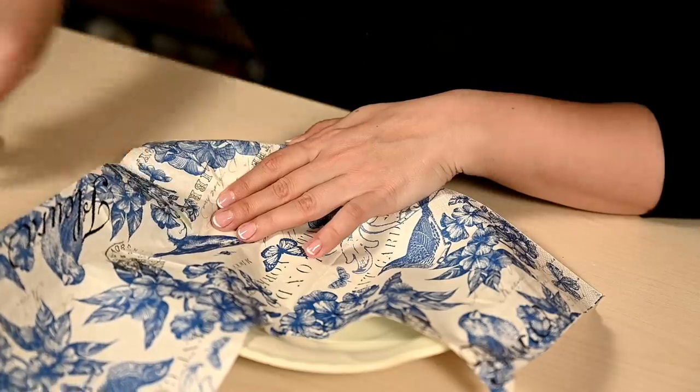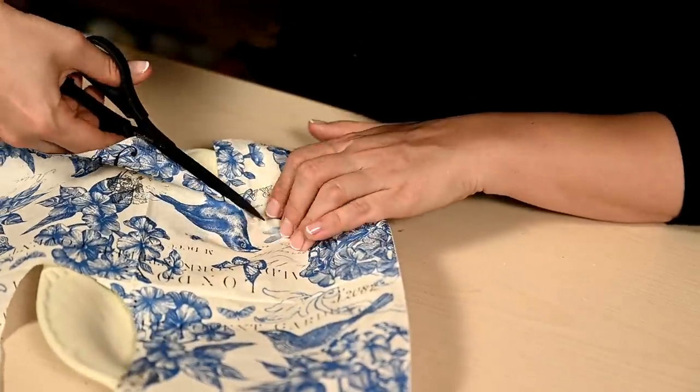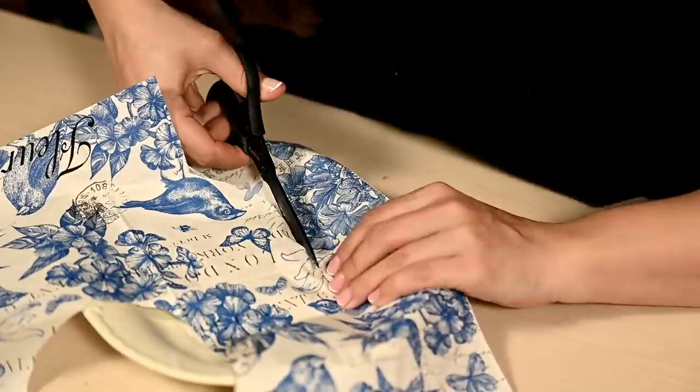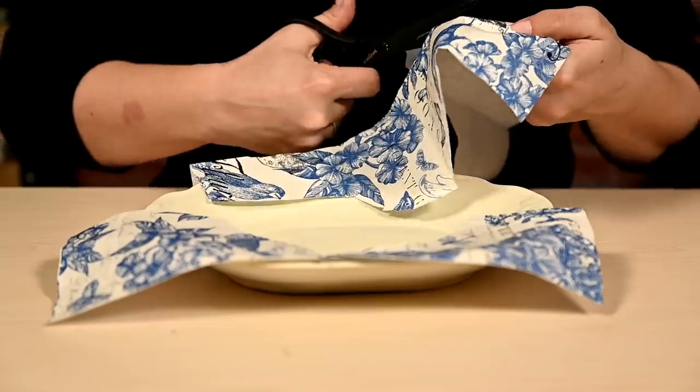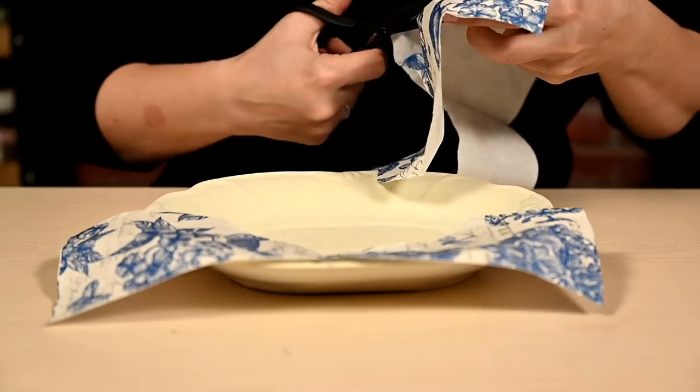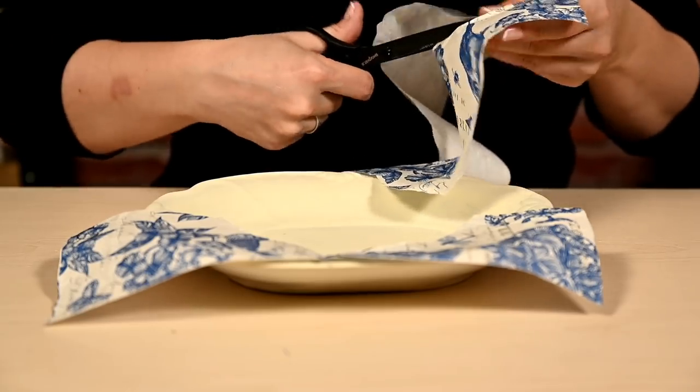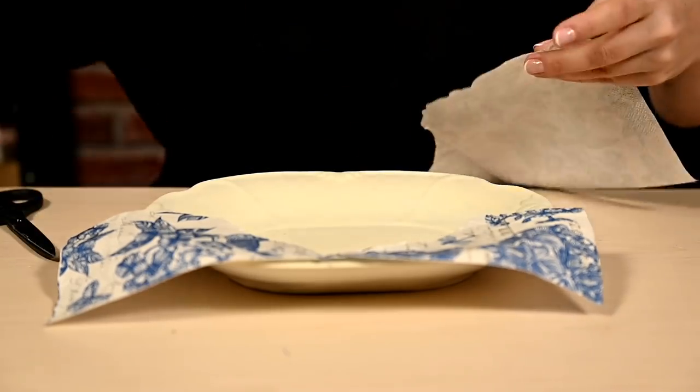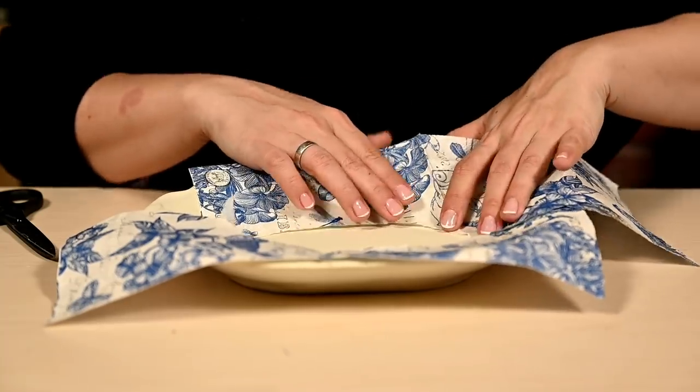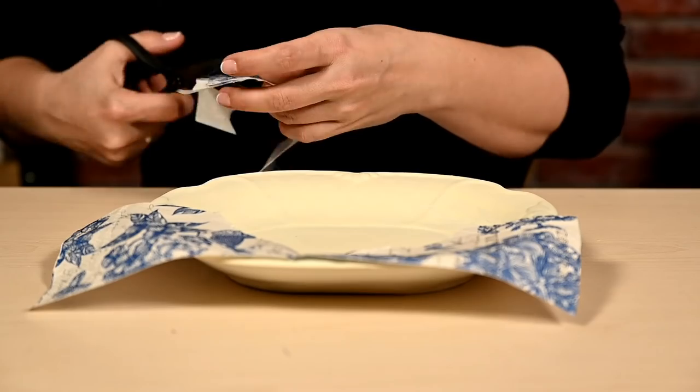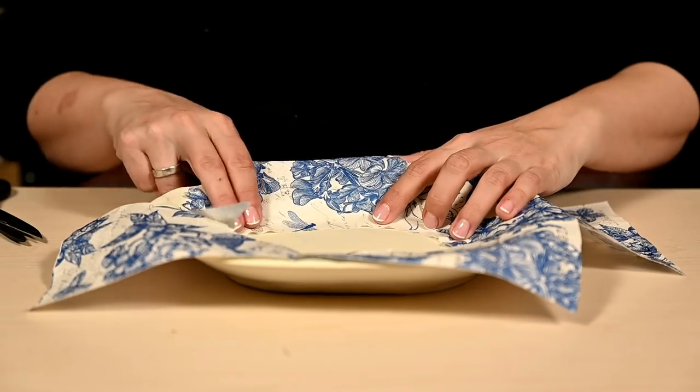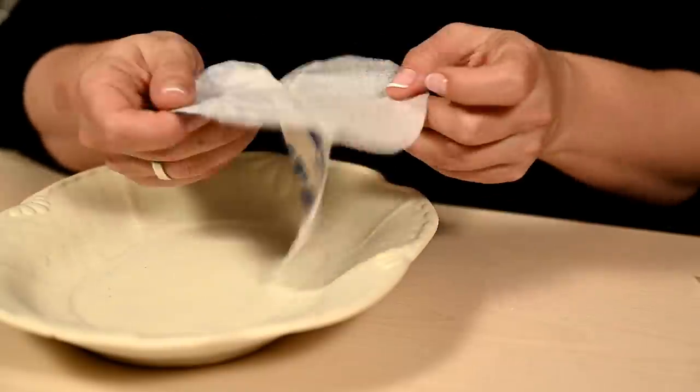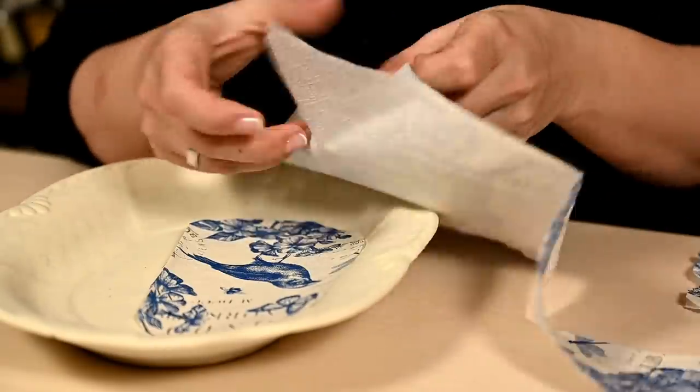And I'm cutting out two pieces for the sides of the dish from the rest of the napkin. I'm also cutting out the print near the edges so that the edges are not so noticeable.